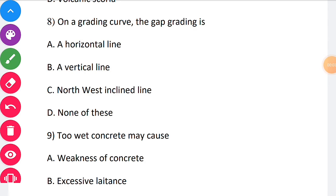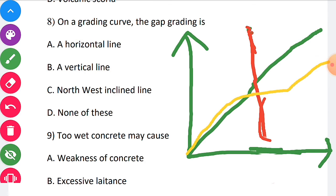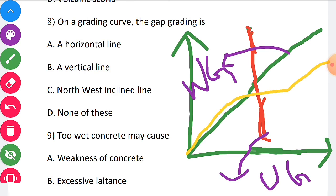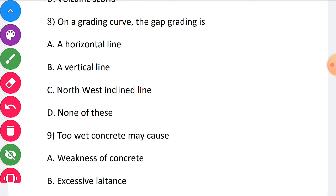Eighth question: On a grading curve, the gap grading is? All are very well aware of the grading curve. Let us consider the curve. The green line represents the well-graded aggregate, whereas the red line represents uniform grading. The yellow line represents gap grading. Therefore, it is represented by a horizontal line. The correct answer for this question is option A: horizontal line.